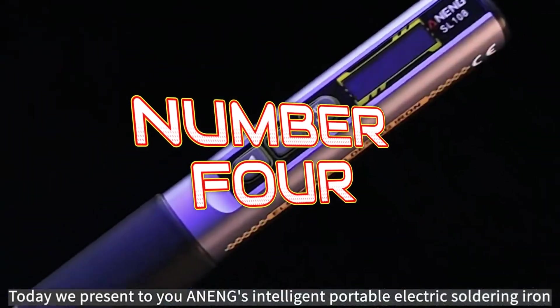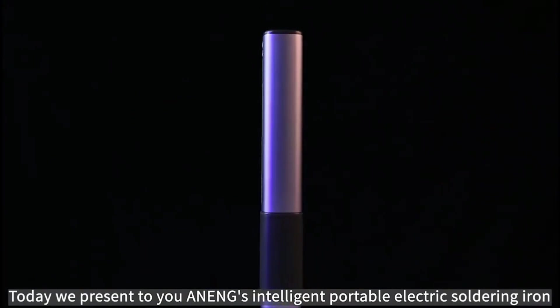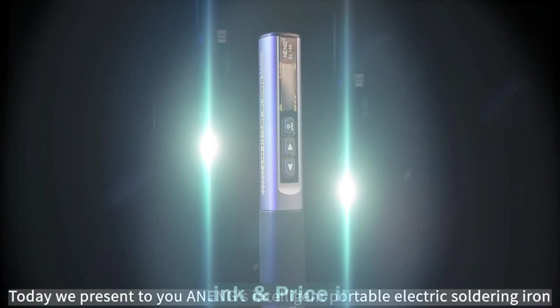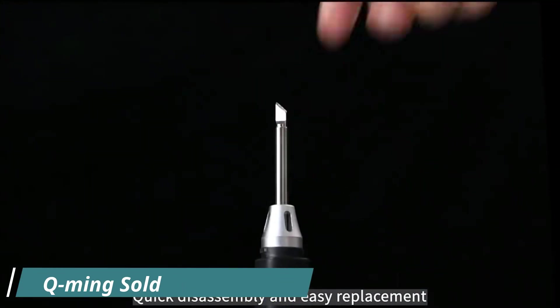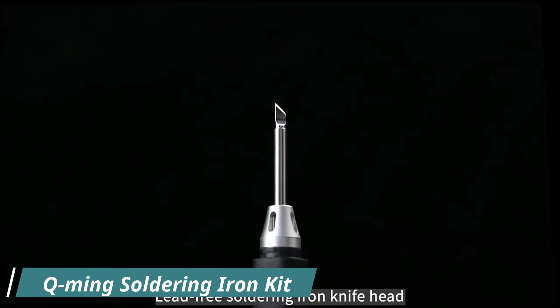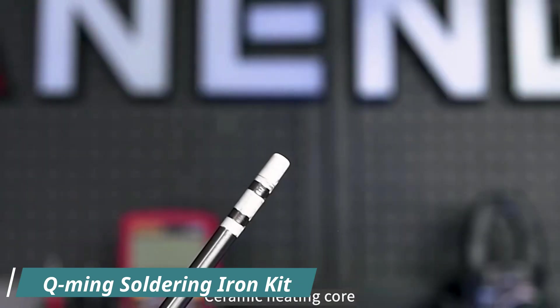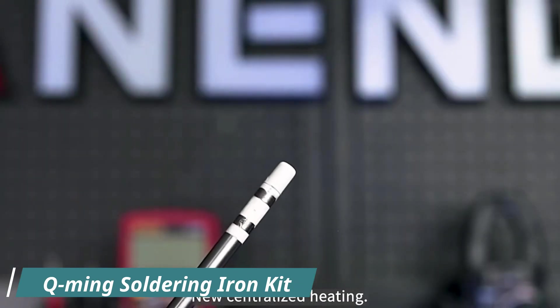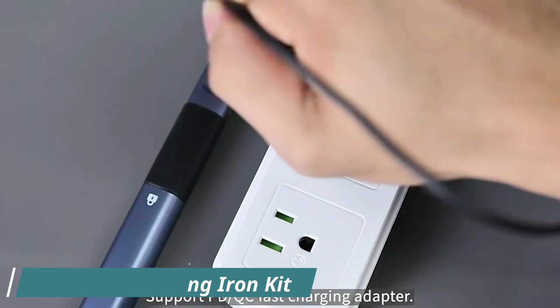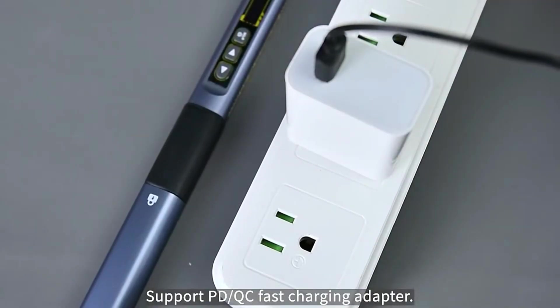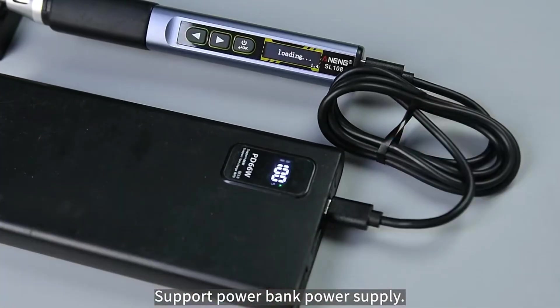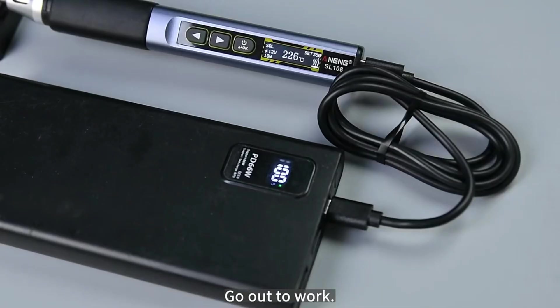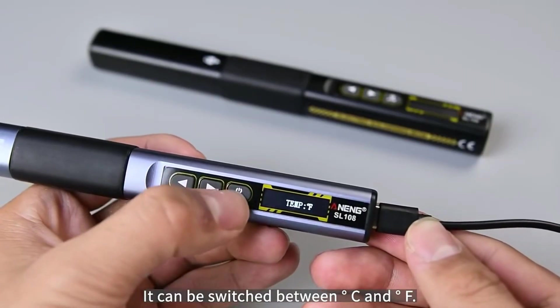Number four in our best soldering iron for electronics list is Qming soldering iron kit. If you're looking for an affordable, reliable soldering iron kit with all the essential accessories, the Qming 80-watt LCD digital soldering iron kit is a fantastic option. The 80-watt ceramic heater provides rapid heat-up, reaching operating temperatures within 20 to 30 seconds.